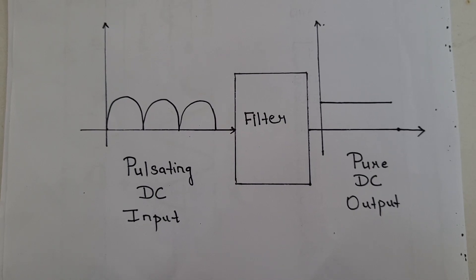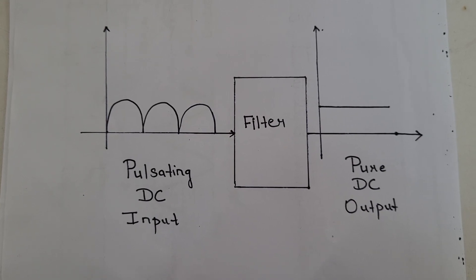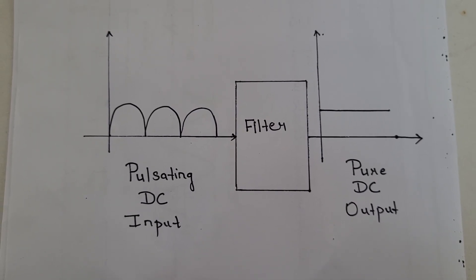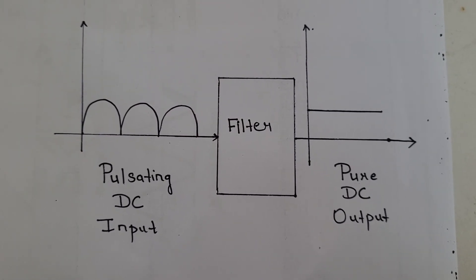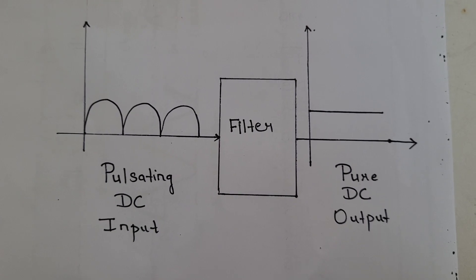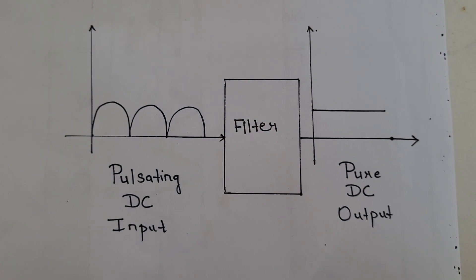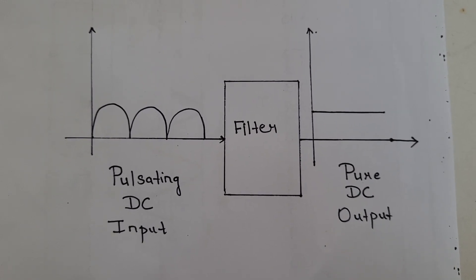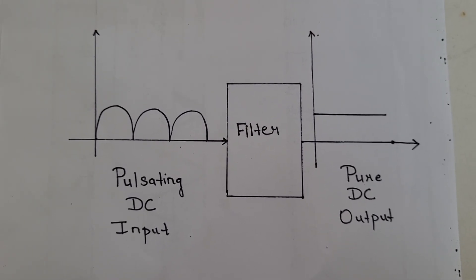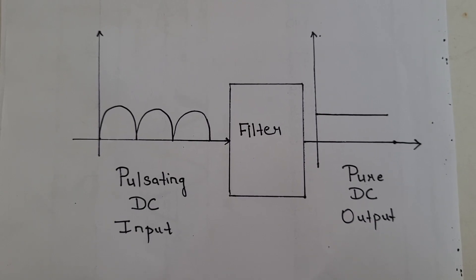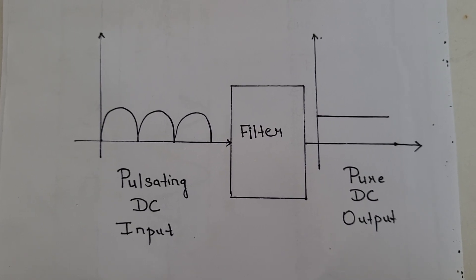Pulsating DC contains both AC and DC components. The DC components are useful but the AC components are not useful, so we need to reduce or completely remove the AC component by using a filter. A filter is an electronic device that allows the DC component and blocks the AC component at the rectifier output. The filter is made up of a combination of components such as capacitor, resistor, and inductor. The capacitor allows the AC component and blocks the DC, while the inductor allows DC and blocks AC. In this practical, the filter is made up of a combination of resistor and capacitor.